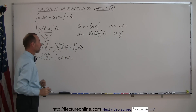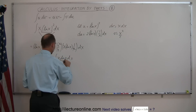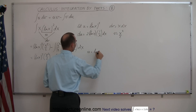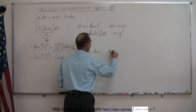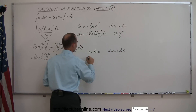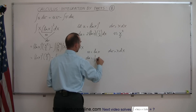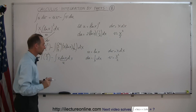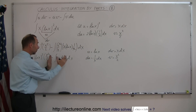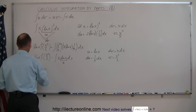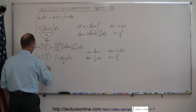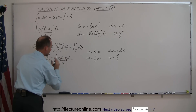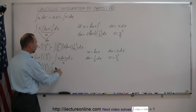I'm going to take this on the side and say let u equal the natural log of x, and x dx will be dv. So u equals the natural log of x, and dv is equal to x times dx. Then du becomes 1 over x dx, and integrating dv we get v equal to x squared over 2. Plugging that into this portion of the problem, this becomes the natural log of x quantity squared times x squared over 2, minus — now it's going to be u times v minus the integral of v du.